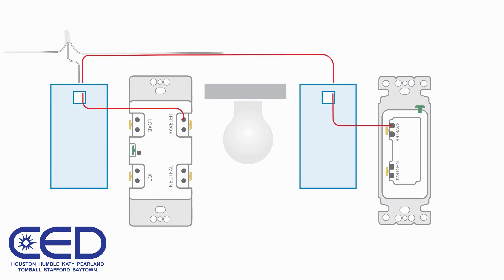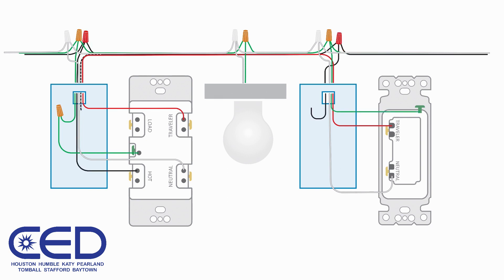You are only connecting the traveler, neutral and ground wires to the single pole switch. The hot and load wires are connected together to complete the circuit. The single pole switch installation is not covered in this video.